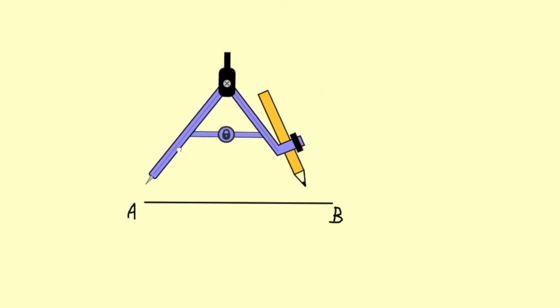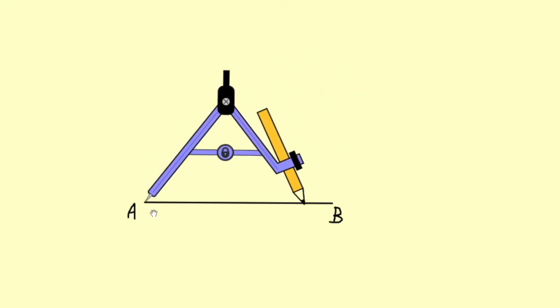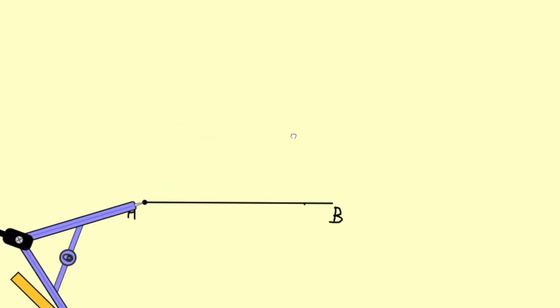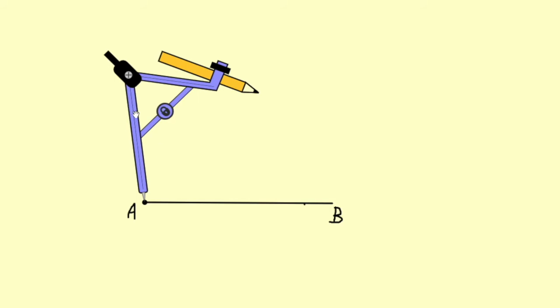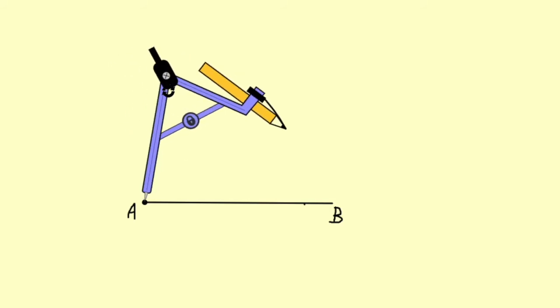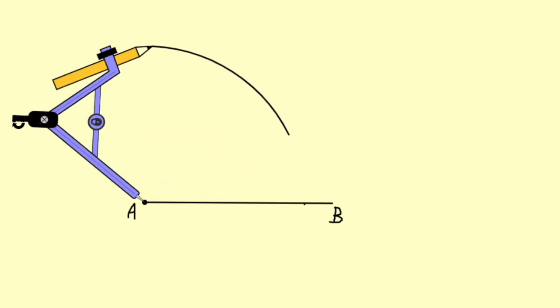We'll keep the tip of the compass here at point A and make an arc like this. So we have taken the measure as 6 cm and drew the arc.